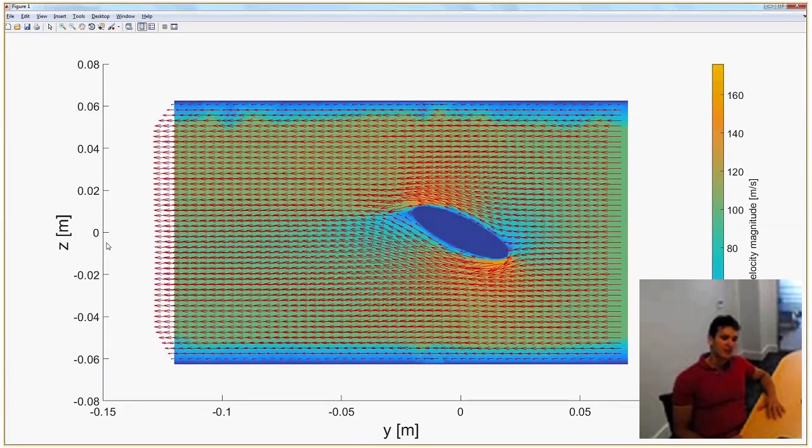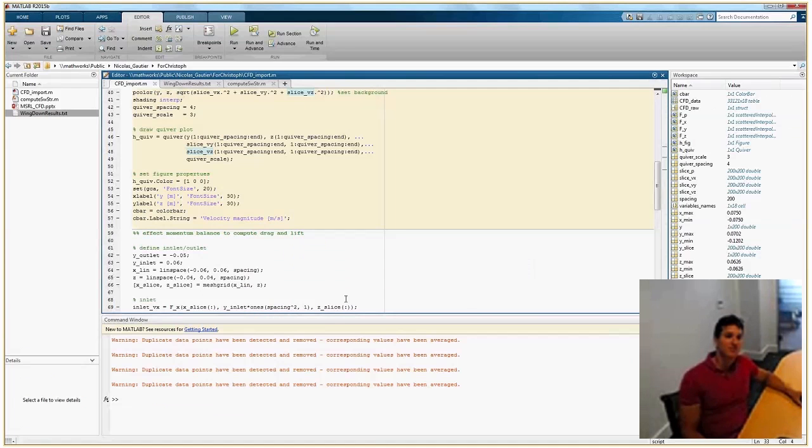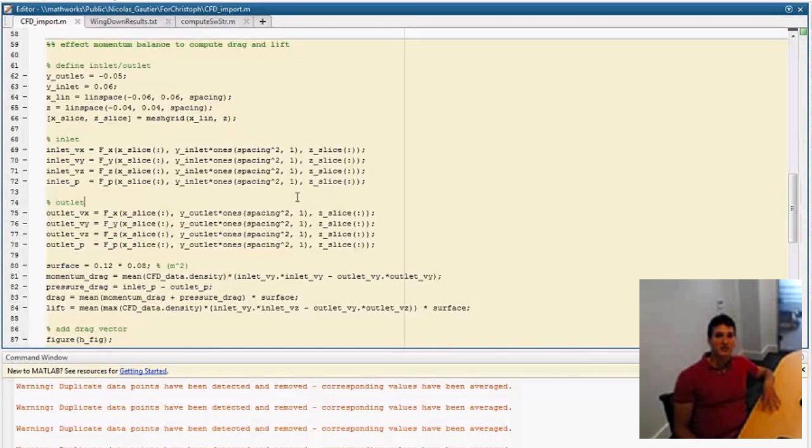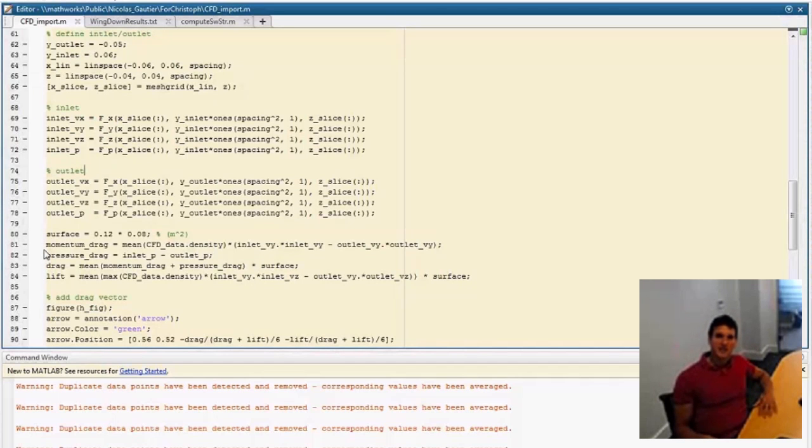Now let's say I want to look at the drag on the wing. What we would need to do is the momentum balance before and after the wing, so essentially at Y equals 0.05 and Y equals minus 0.05. Let's see how we can do that. So that's the next section. Let's say we will first define an inlet and an outlet, so we specify the Y outlet and inlet positions. Then we again construct a mesh grid, and we will then do the interpolation. This time it will be an XZ slice instead of a YZ slice, so we will get the velocities and pressure at the inlet and at the outlet.